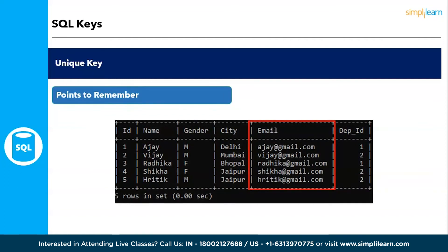In an employee database, the primary key is the employee ID. However, each employee's email ID is also unique — no two employees share one email ID. It's unique but it's not officially the primary key. You can only declare one primary key in a table, but you can have multiple unique keys.